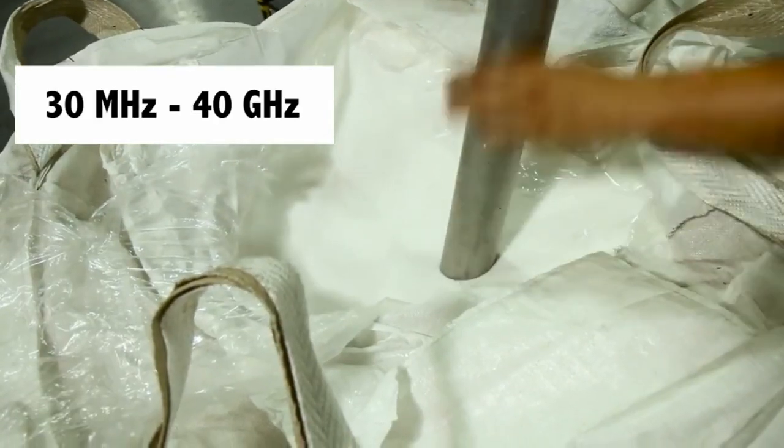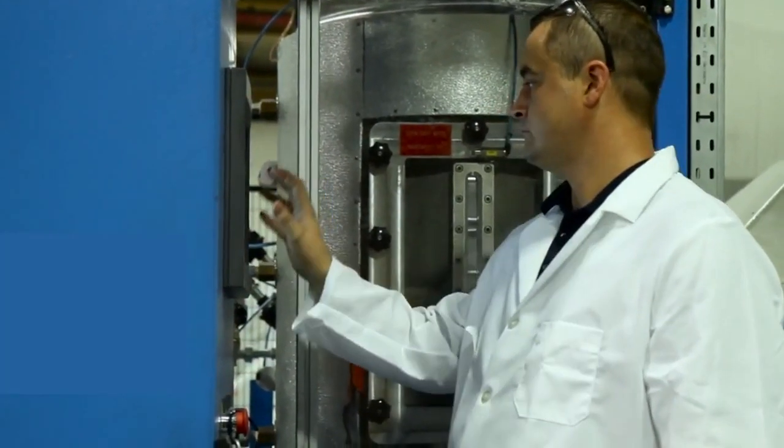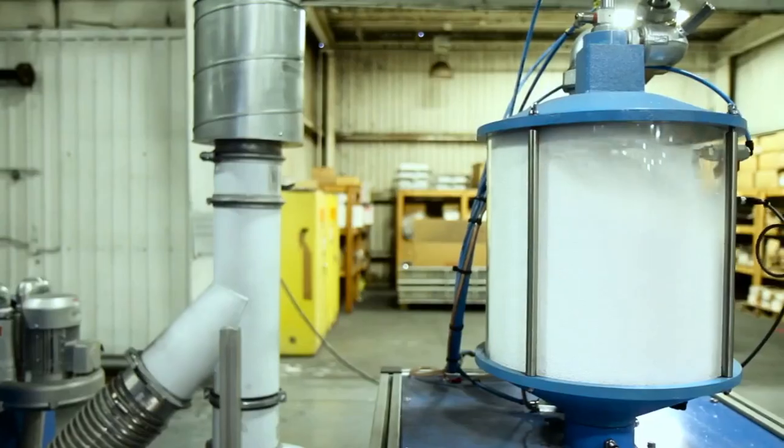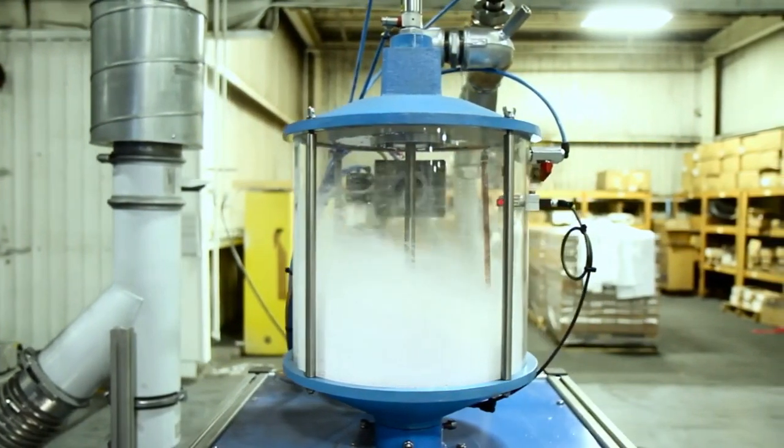Providing outstanding performance between 30 MHz to 40 GHz, the polystyrene beads within the Durasorb absorbers are uniformly coated, which provides superior high-frequency performance. This uniformity gives the absorber its added level of RF performance.